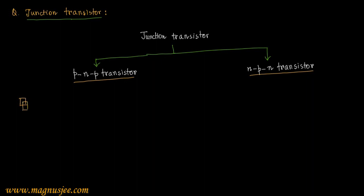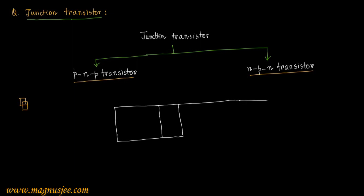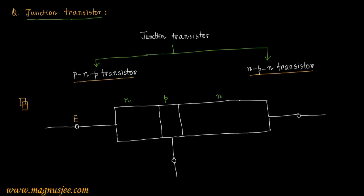We have to explain the different parts of a transistor. For this, we shall draw an NPN transistor. An NPN transistor has three terminals, and they are made of N-type, P-type, and N-type semiconductors. We can denote the three terminals as E, B, and C — E is emitter, B is base, and C is collector.